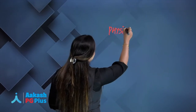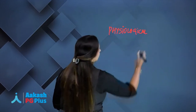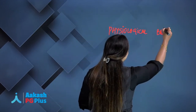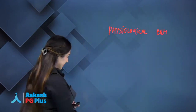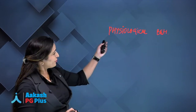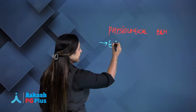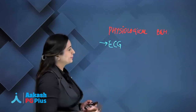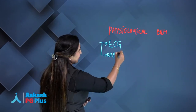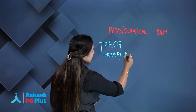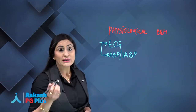Both physiological and behavioral components are monitored in anesthesia. Physiological components include continuous monitoring of ECG, and blood pressure using NIBP or invasive arterial blood pressure, depending on what the case may be.